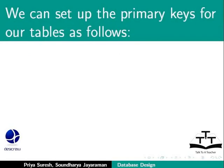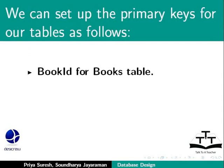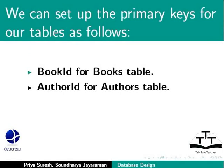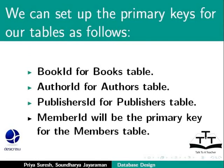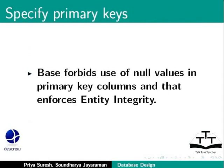As shown in the image on the screen, we can set up the primary keys for our tables as follows: Book ID for the books table, Author ID for the authors table, and Publishers ID for the publishers table. Similarly, though not shown here, Member ID will be the primary key for the members table. By setting up the primary keys in the tables, we are enforcing entity integrity. Entity integrity ensures that there are no duplicate records within the table, and that the field that identifies each record within the table is unique and never null.